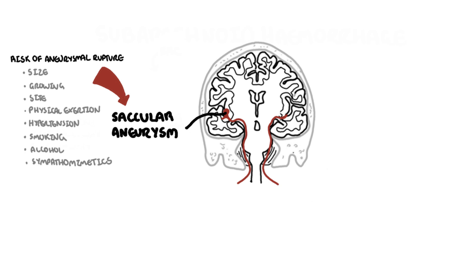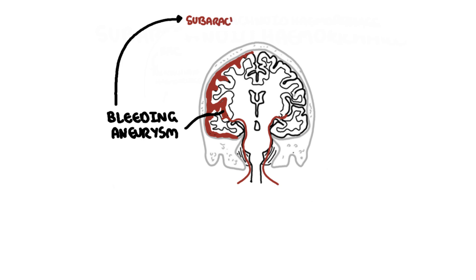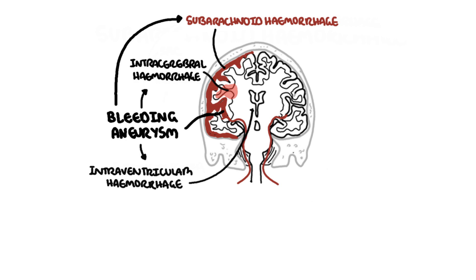Alcohol and the use of sympathomimetics are also risk factors. When an aneurysm ruptures, bleeding occurs in the subarachnoid space, causing subarachnoid hemorrhage. Note that with a ruptured aneurysm, there can also be a concurrent intracerebral hemorrhage, as well as an intraventricular hemorrhage — bleeding within the ventricles of the brain.